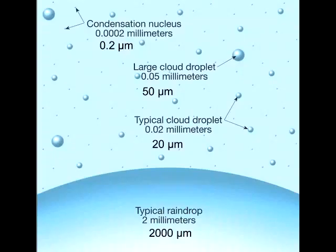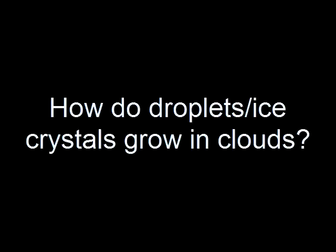We learned that when humid air rises, small droplets form through condensation and form clouds. However, not all clouds will cause precipitation. Small cloud droplets cannot fall to the Earth's surface because friction will slow their movement and they will evaporate before they reach the ground. Their volume needs to increase by one million times. The condensation process is too slow to explain the growth of droplets in clouds that will produce precipitation.